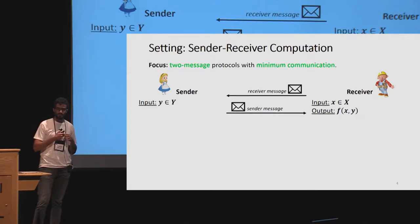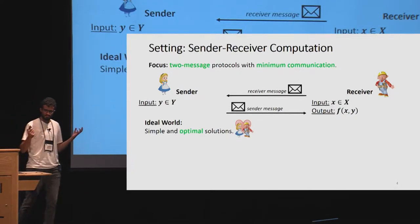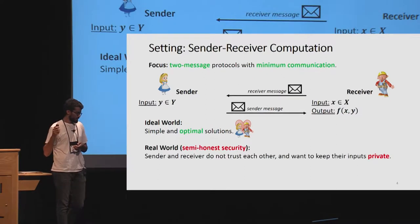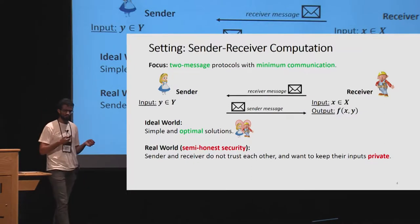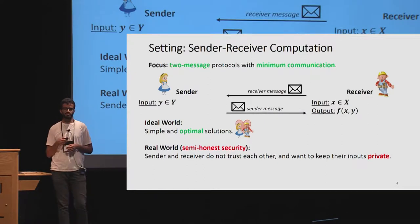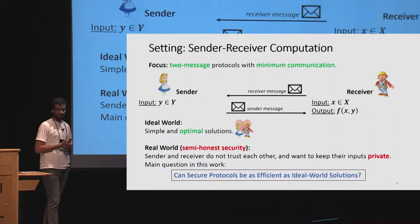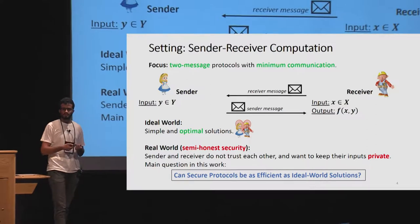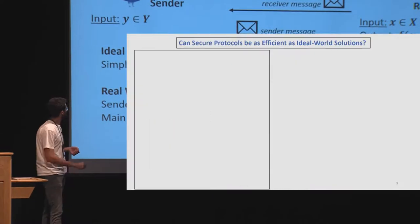Our goal is to minimize the communication complexity of such protocols — in other words, to minimize the length of these two messages. In an ideal world where Alice and Bob trust each other, we can construct very simple protocols with optimal communication. But we're in crypto, so we're interested in the scenario where parties do not trust each other and each wants to keep their inputs private. We consider the semi-honest notion of security and ask: can protocols that guarantee security be as efficient as protocols from the ideal world?